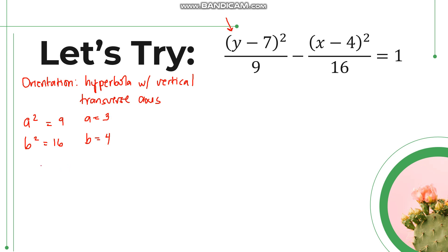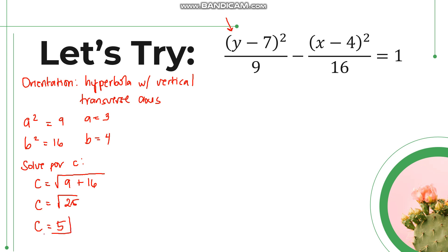Now that we have a and b, we can solve for c using the formula: square root of a squared plus b squared. So c equals the square root of 9 plus 16, which is the square root of 25, giving c equals 5. So a is 3, b is 4, c is 5. From the equation, h is with x and k is with y, so our center is (4, 7).